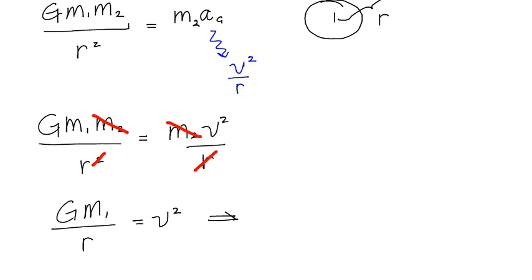That gives me the orbital speed or linear speed of the orbiting body is equal to the square root of G M. A lot of times we use a big M to represent the body that is being orbited over r.